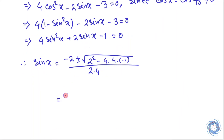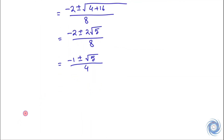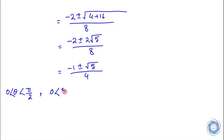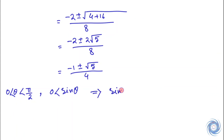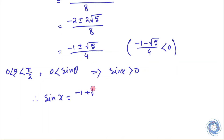Simplifying this we have the quadratic formula result. Since we know that if theta lies in 0 to pi over 2, then sin theta is positive. Since x equals pi over 10 lies in this interval, we have sin x greater than 0. Note that here we have minus root 5 over 4, which is less than 0. Therefore sin x equals the positive root.